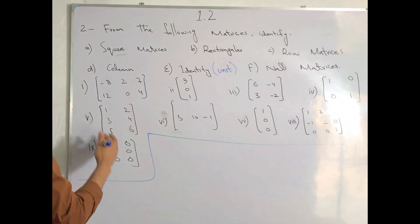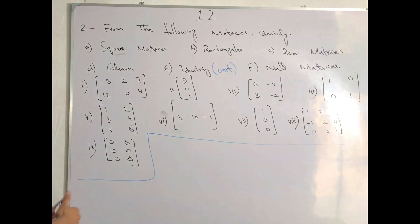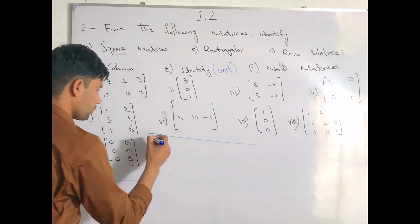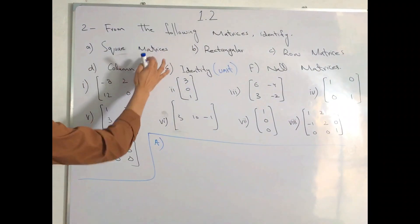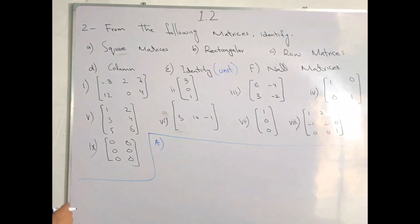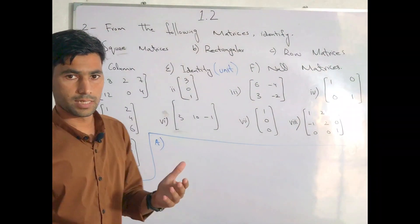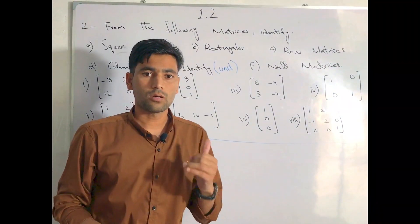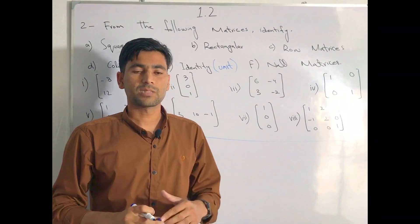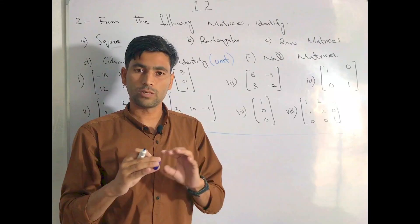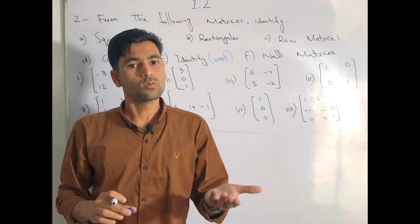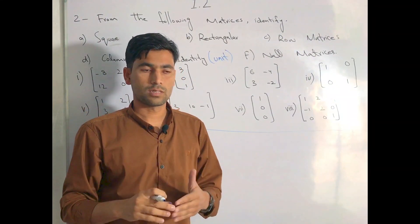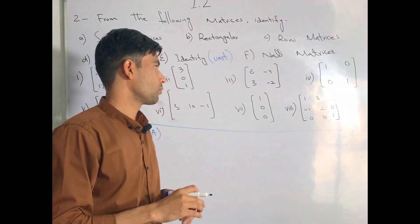Now we will find the square matrix. According to the definition, the number of rows and columns are equal. For example, 2×2, 3×3, 4×4 — these are all square matrices.